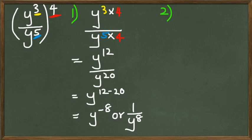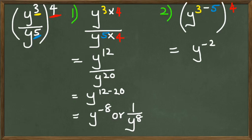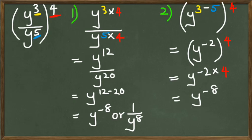Using Method 2, we work inside the bracket first. We have y to the power of 3, and since the 5 is in the denominator it gets subtracted, giving y to the power of 3 minus 5, which is y to the power of negative 2, raised to the power of 4. So we get y to the power of negative 2 multiplied by 4, which equals y to the power of negative 8 — the same as 1 over y to the power of 8. Both methods give the same answer.